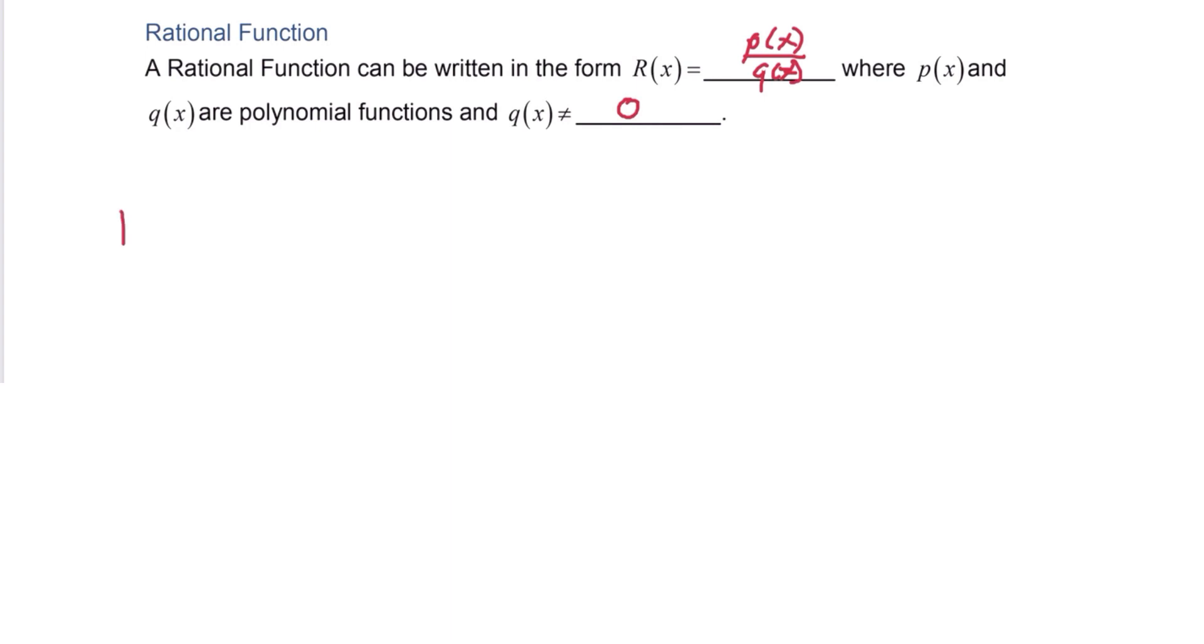Let's write out the generic definition of a rational function using the polynomial definition that we saw earlier. So r of x is a sub n x to the n plus a sub n minus 1 x to the n minus 1 plus, and that will continue all the way down to a sub 1 x plus a sub 0.